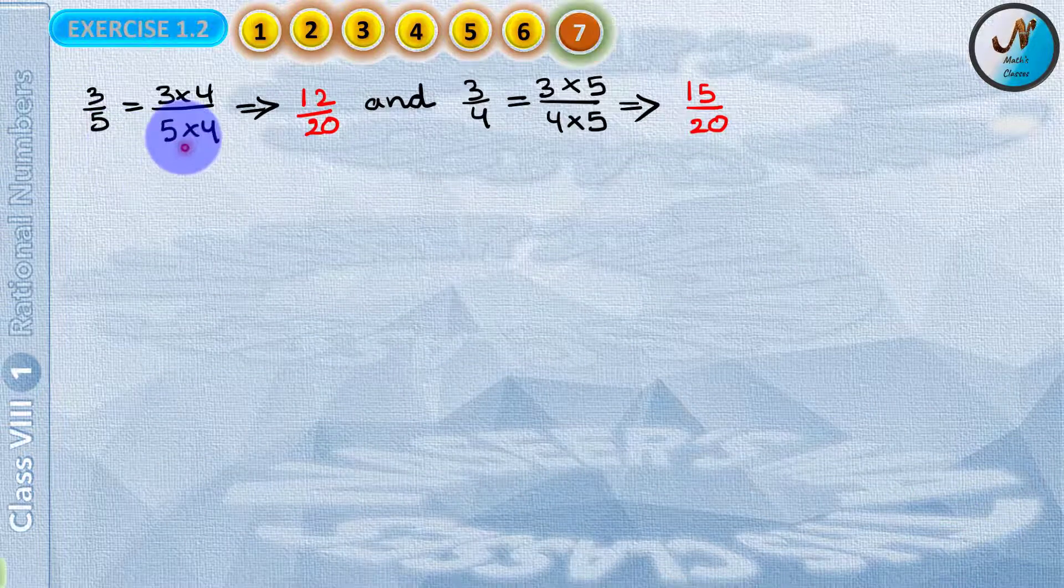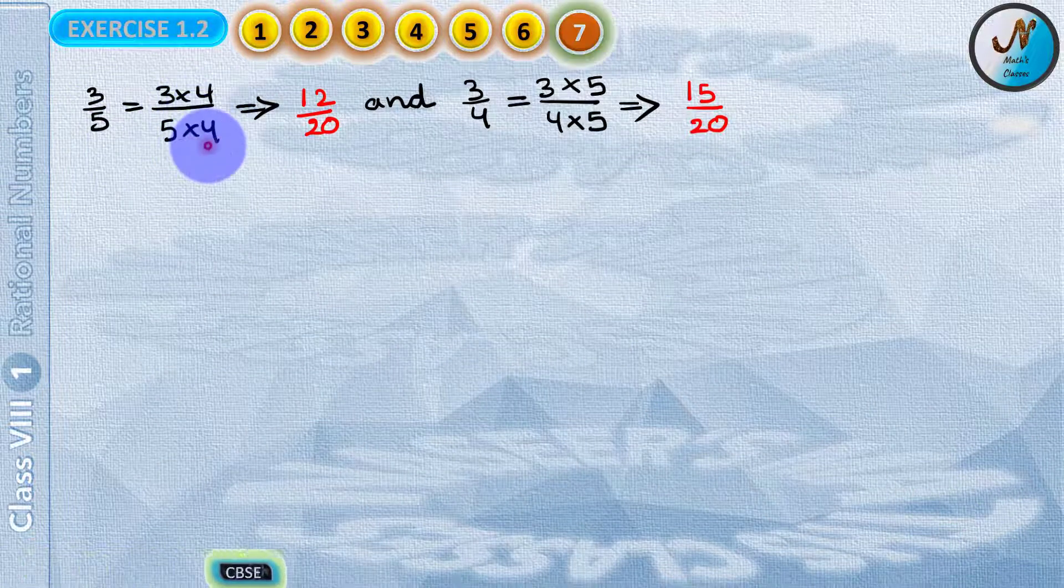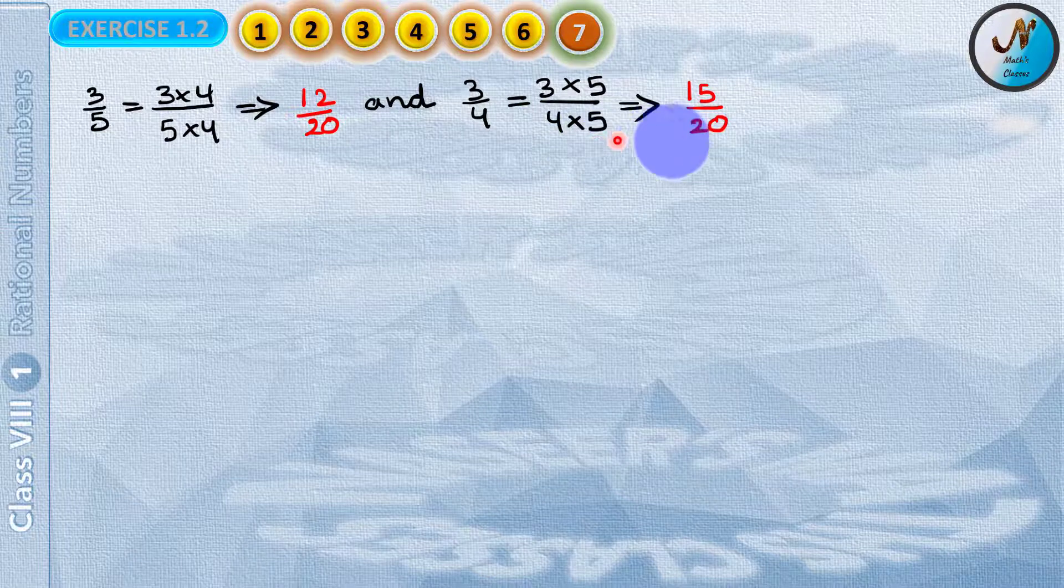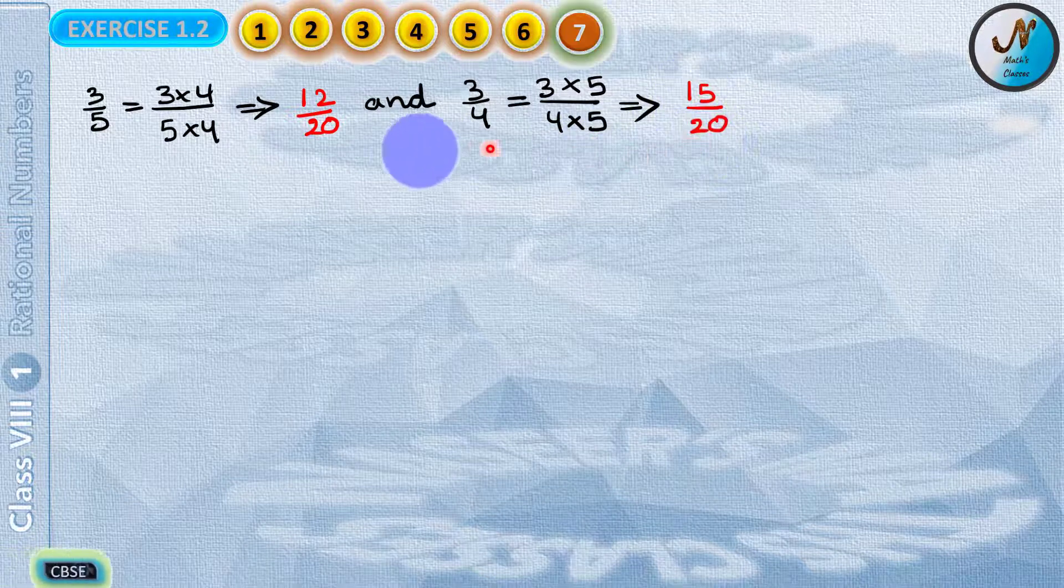So 3 by 5 is written as 3 into 4 by 5 into 4 which implies 12 by 20, and 3 by 4 is equal to 3 into 5 by 4 into 5 which implies 15 by 20.